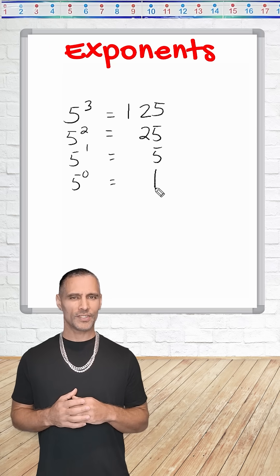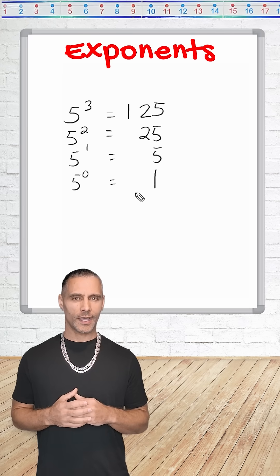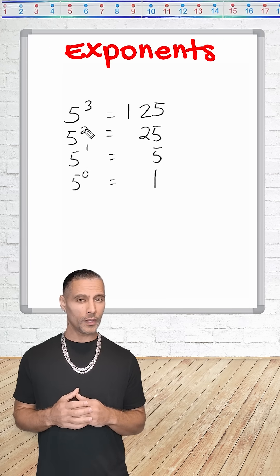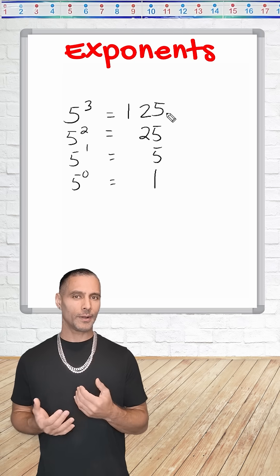Now, let us analyze the resulting pattern. Notice each time we reduced the exponent by 1, we divided the previous answer by 5.